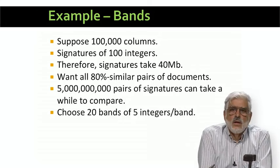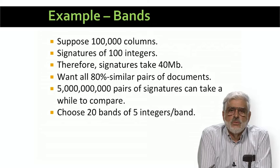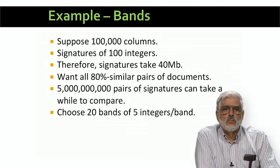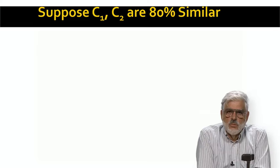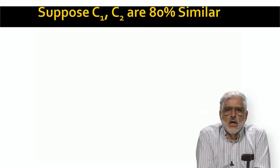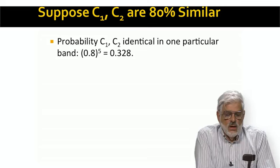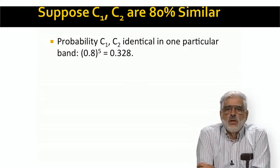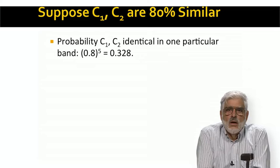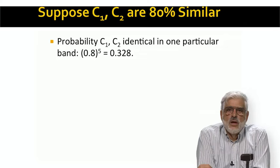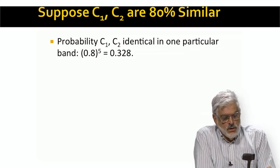In our example, we divide the 100 rows of the signature matrix into 20 bands with 5 rows each. Consider two columns C1 and C2 representing sets with Jaccard similarity 0.8. Because of the randomness in minhashing, C1 and C2 may agree in slightly more or fewer than 80 rows, but most likely approximately 80. The probability they are 100% similar in one given band is 0.8 to the 5th power, or approximately 0.328 — not a very high probability. But we have 20 chances to make them a candidate pair.